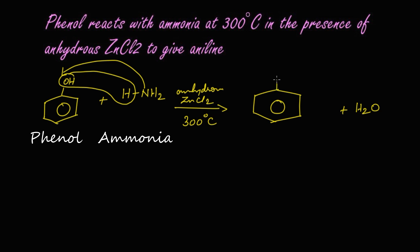The remaining NH₂ replaces the OH group, and we get aniline as the product — in the benzene ring, NH₂ is attached instead of OH. To summarize: phenol reacts with ammonia at 300°C in the presence of anhydrous zinc chloride to give aniline.